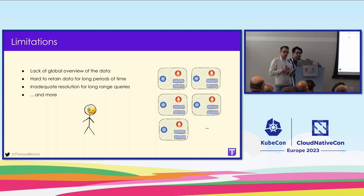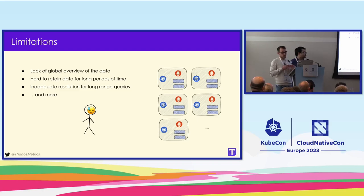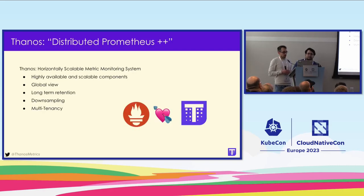Very quickly, we see that we won't be able to get a global view of the data — we won't be able to query metrics across environments, across Kubernetes clusters, or across namespaces. We also won't be able to retain data for a long period of time because of local storage constraints. Disks can be hard to move around or expensive. And the resolution that Prometheus has — scraping every 30 seconds — means that a query across three or six months of data is going to be very dense and challenging to execute.